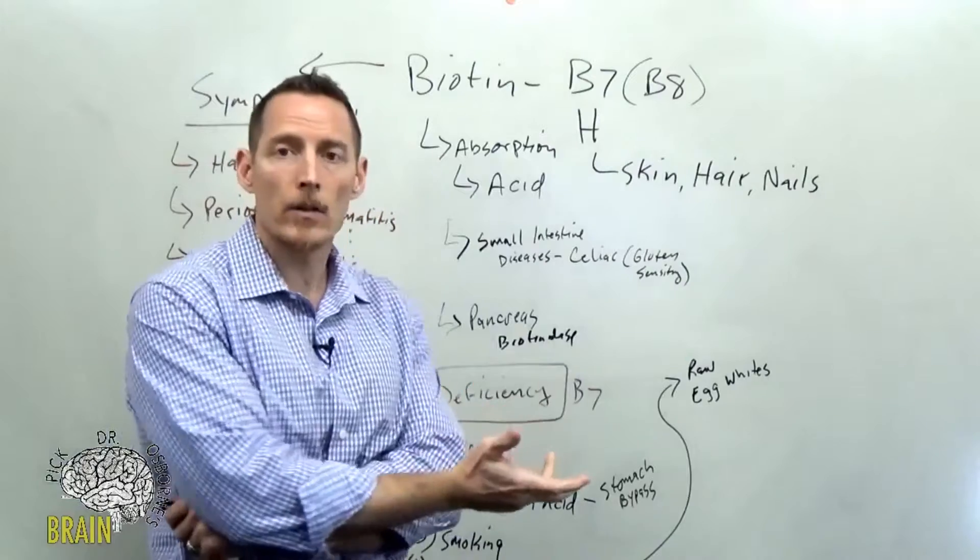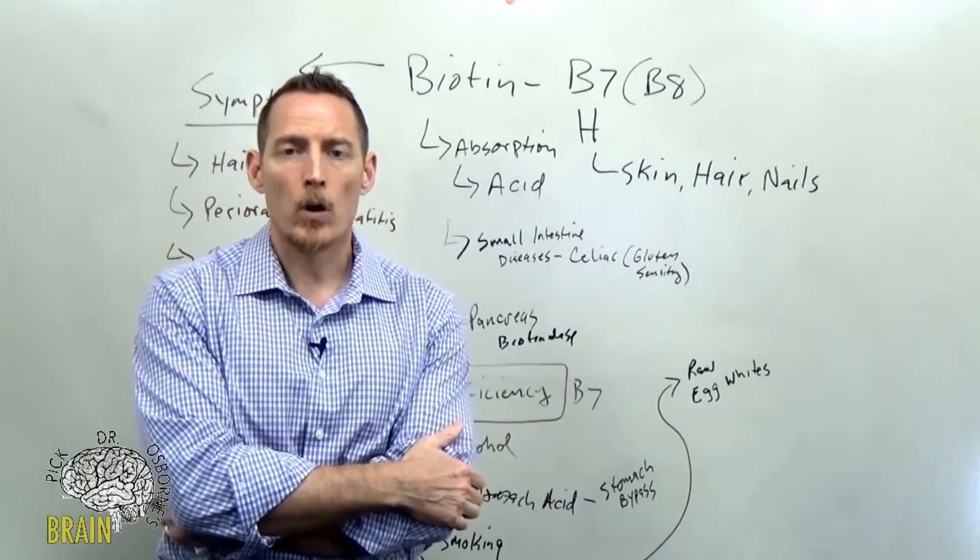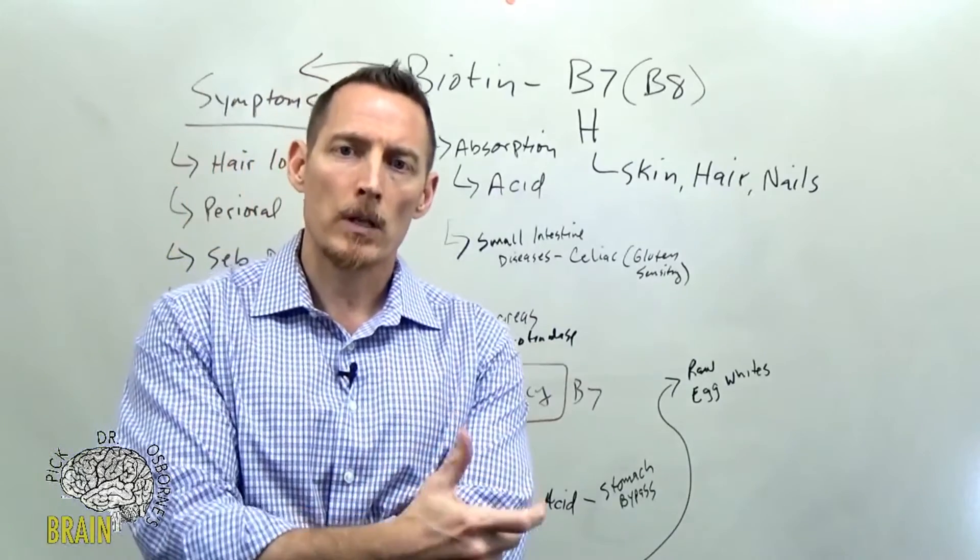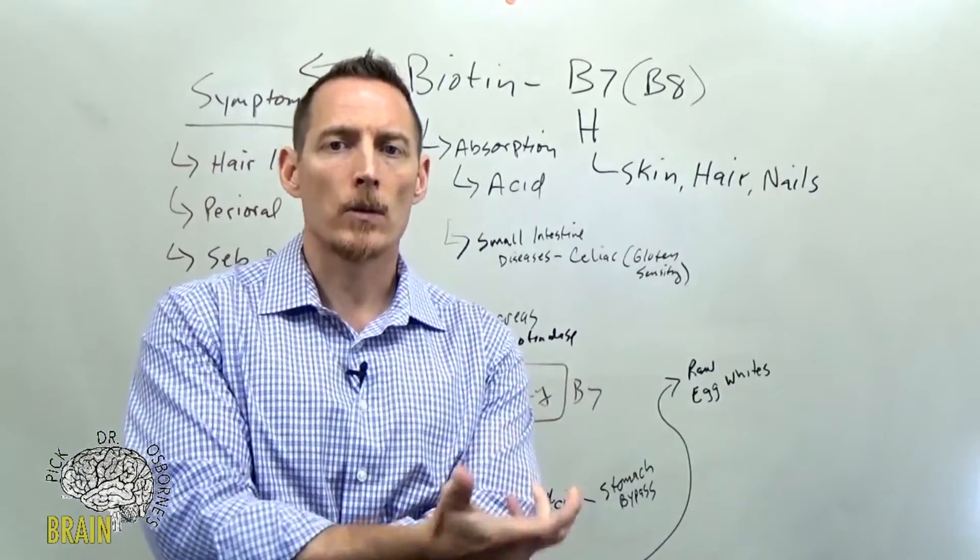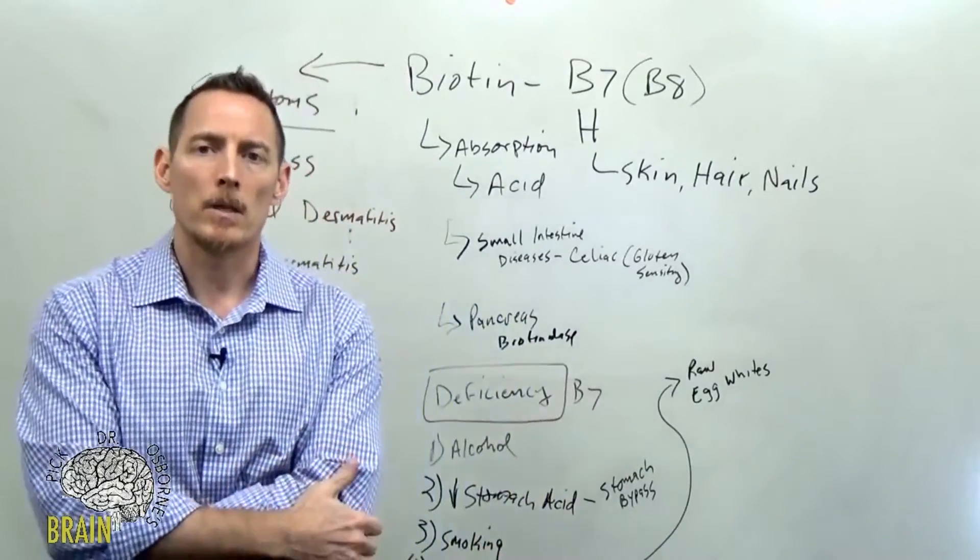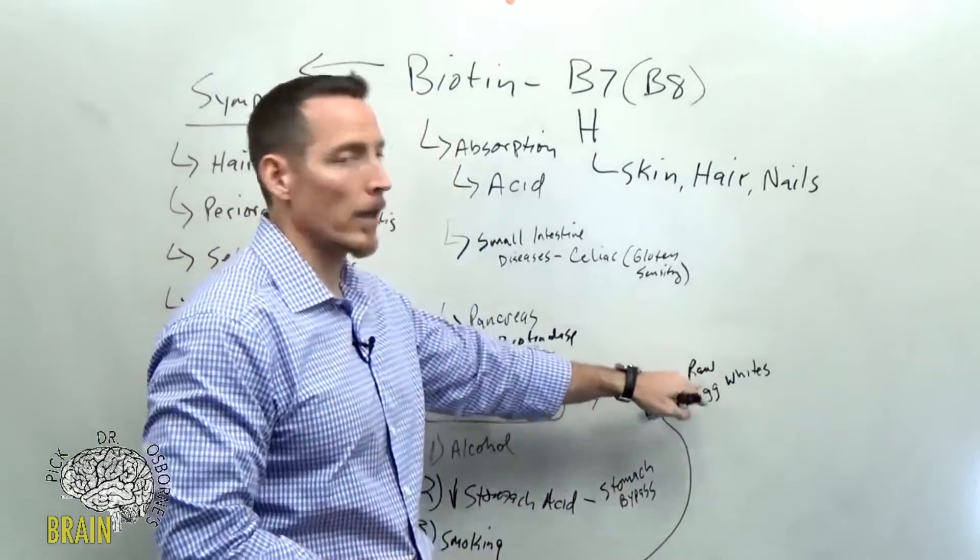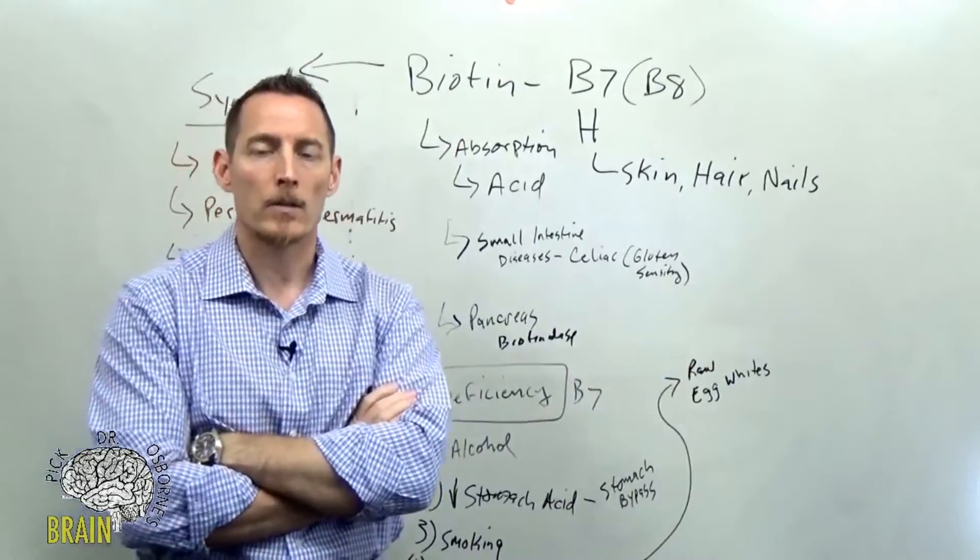Now, if you're cooking the egg thoroughly, you don't have to worry about it because when you cook the egg, the Avidin, the protein that binds biotin is denatured. And so it allows that biotin to be free to absorb. So again, raw egg whites, but not cooked egg whites can create a problem with biotin.